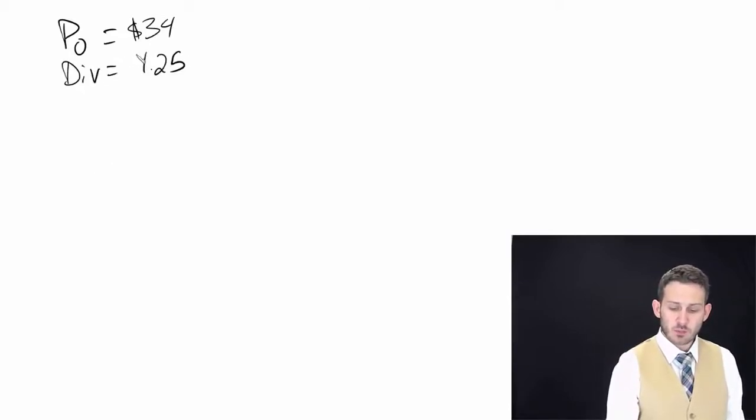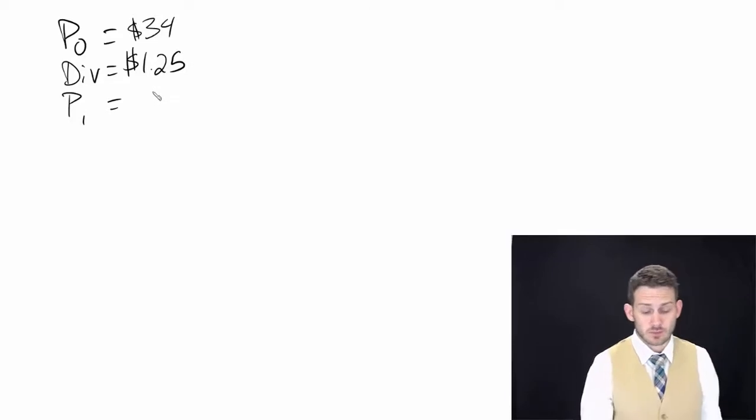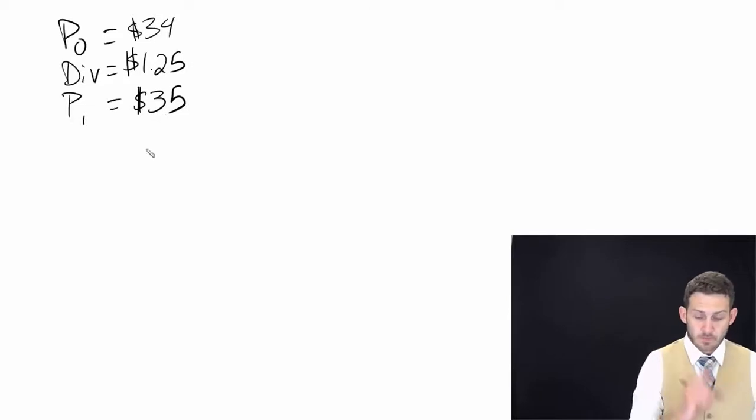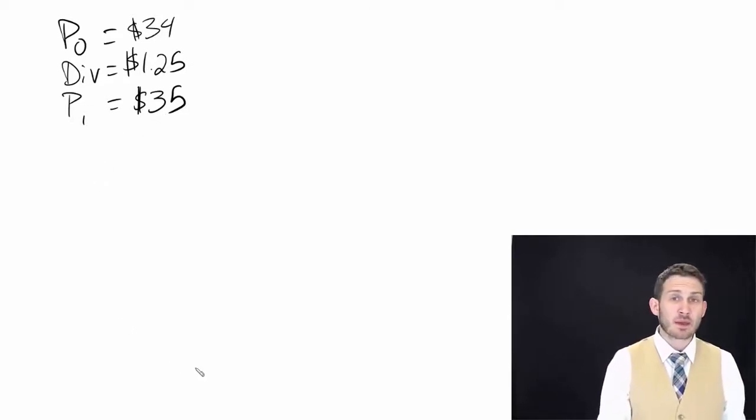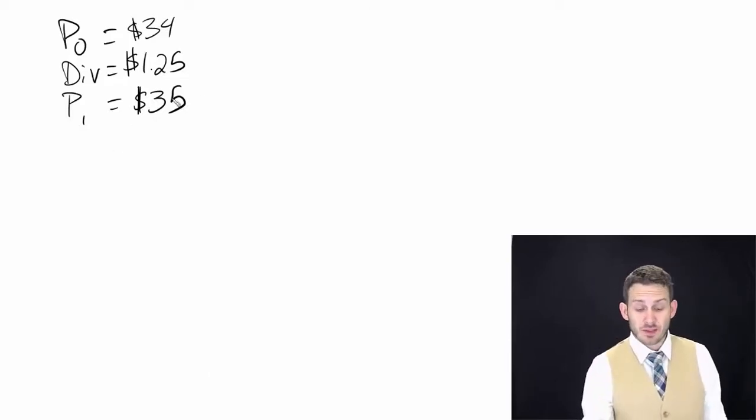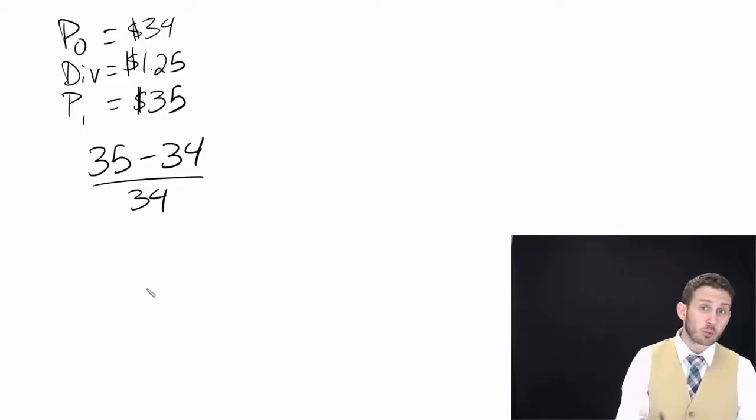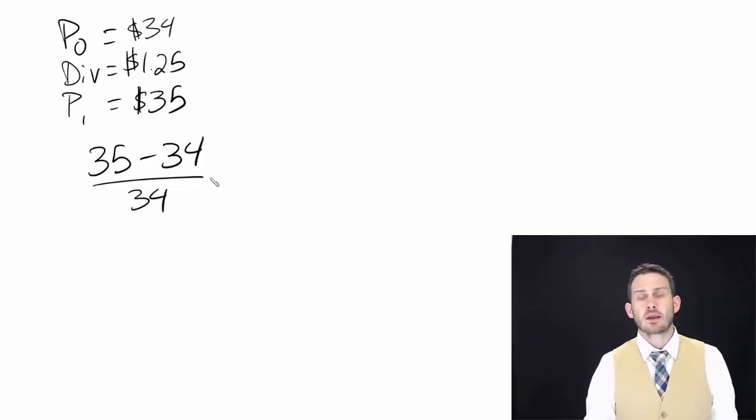Let's say you buy a stock last year with a price of $34. It paid a dividend over the year of $1.25, and the new price, P1, the price today, is $35. First, let's think about how much we actually gained. We have new minus old over old: the new price is $35 minus $34 divided by $34. Make sure you get those in the right place - make sure you have the old price on the bottom, otherwise putting the new price on the bottom is going to give you a totally incorrect answer.